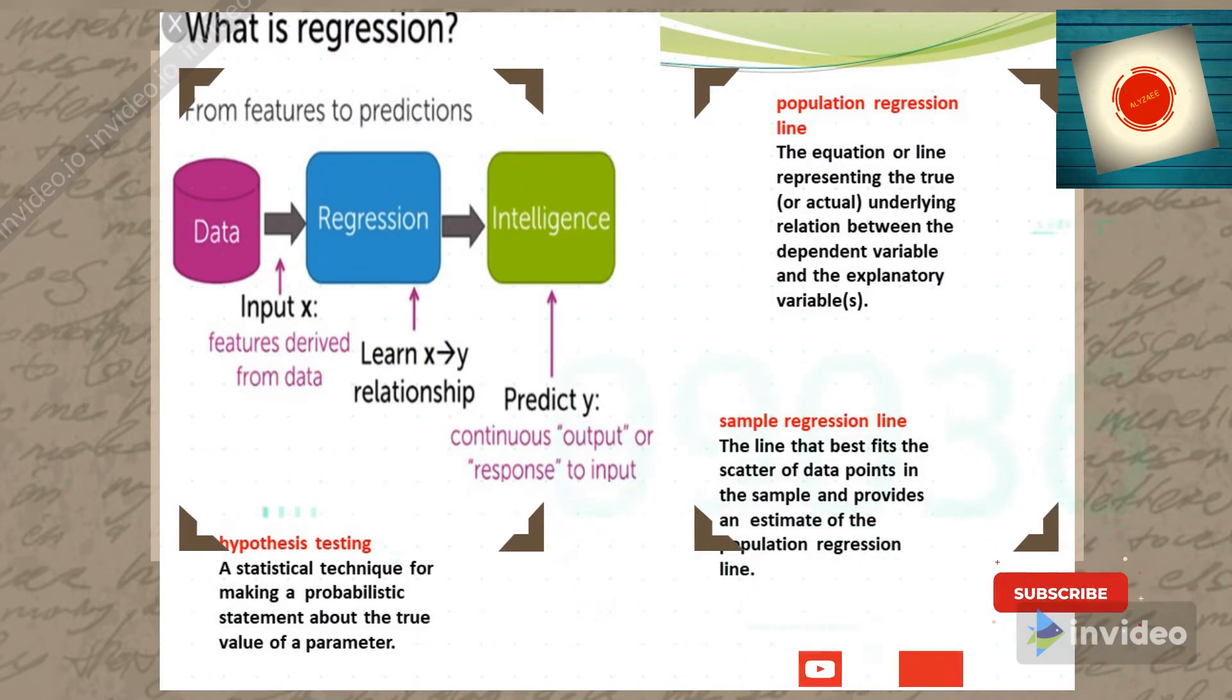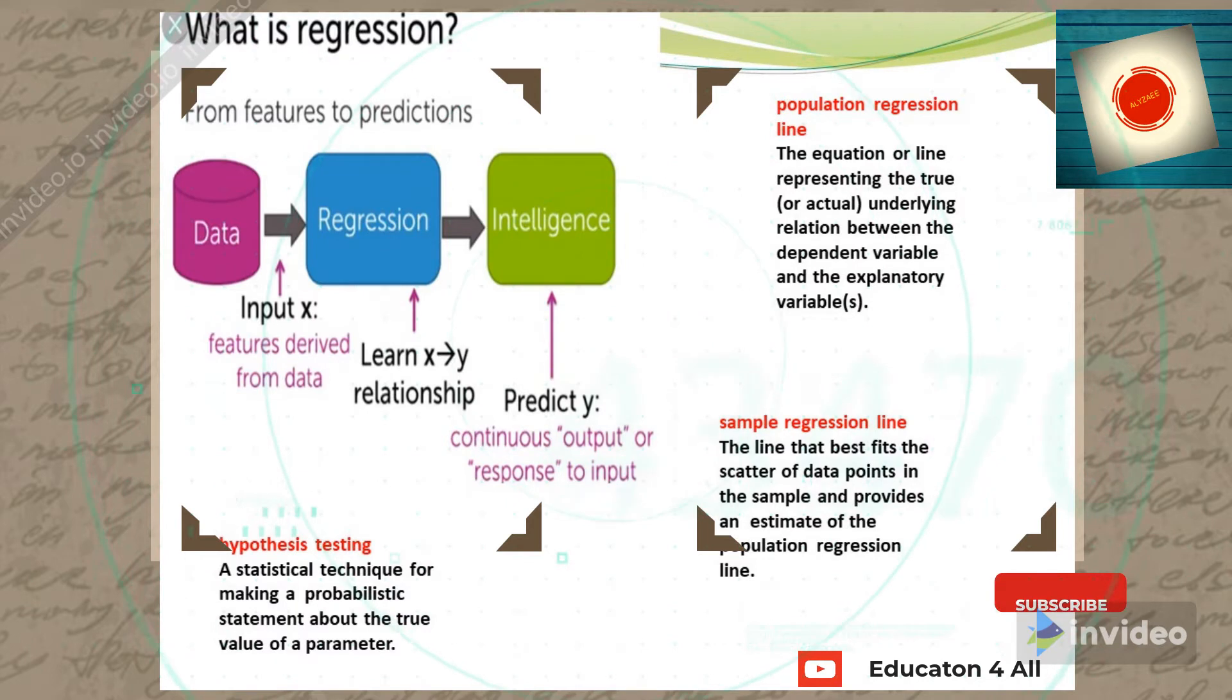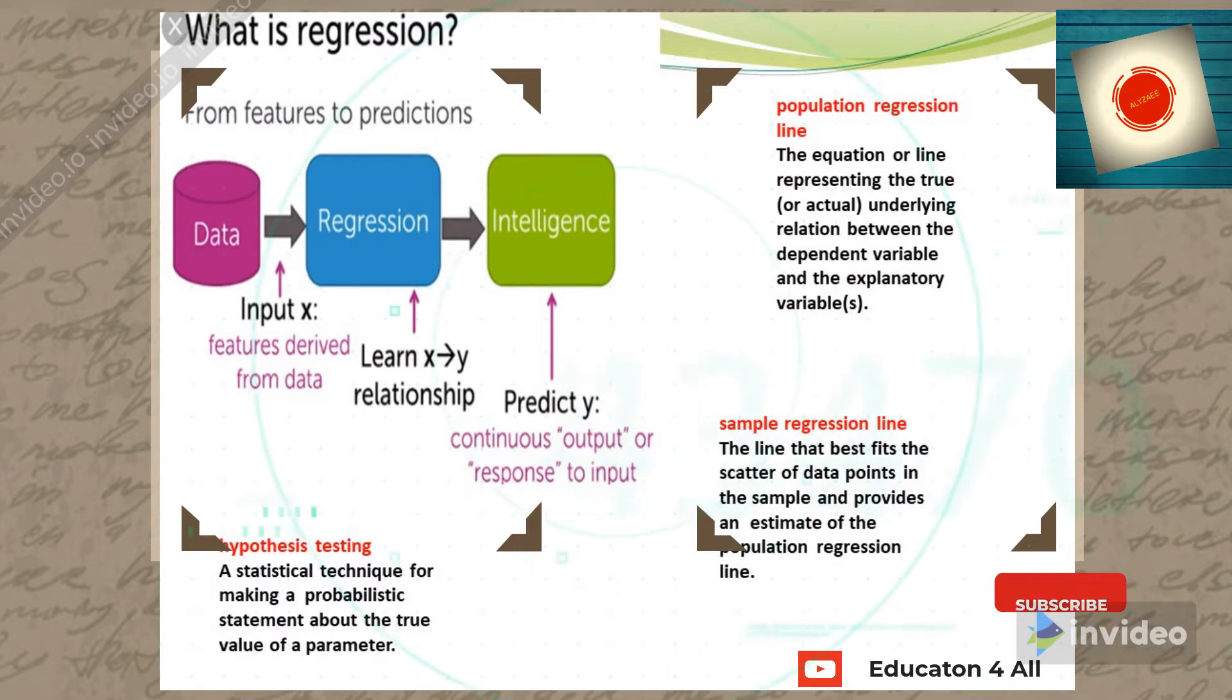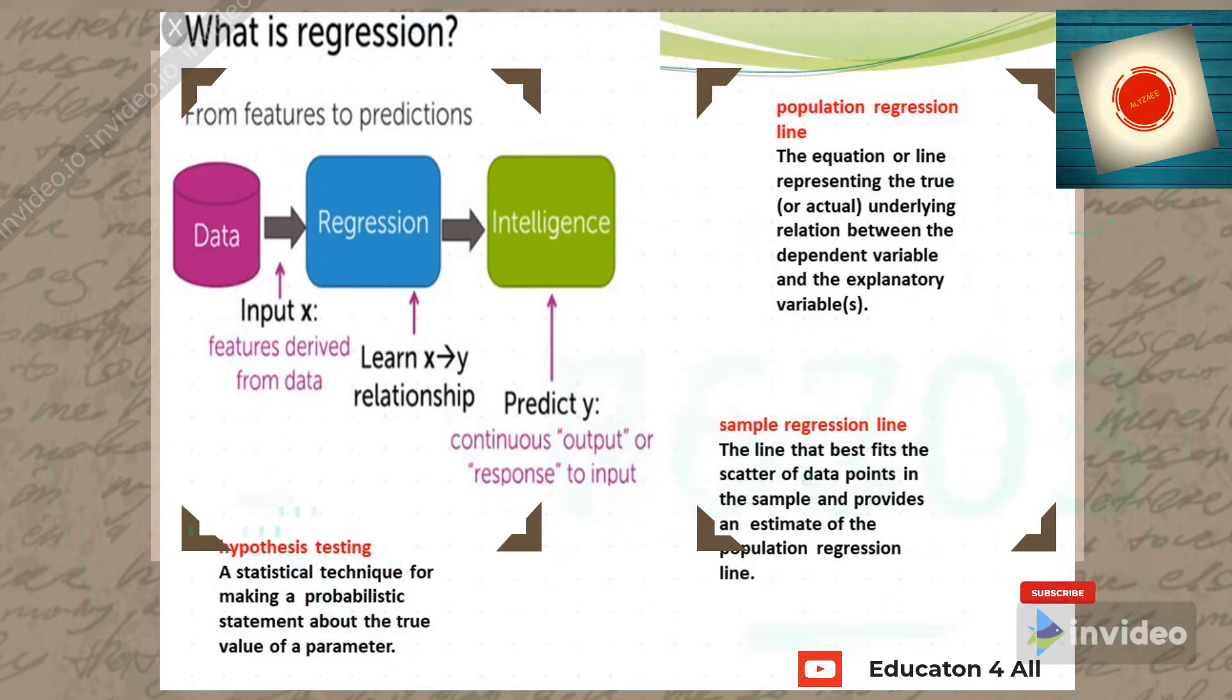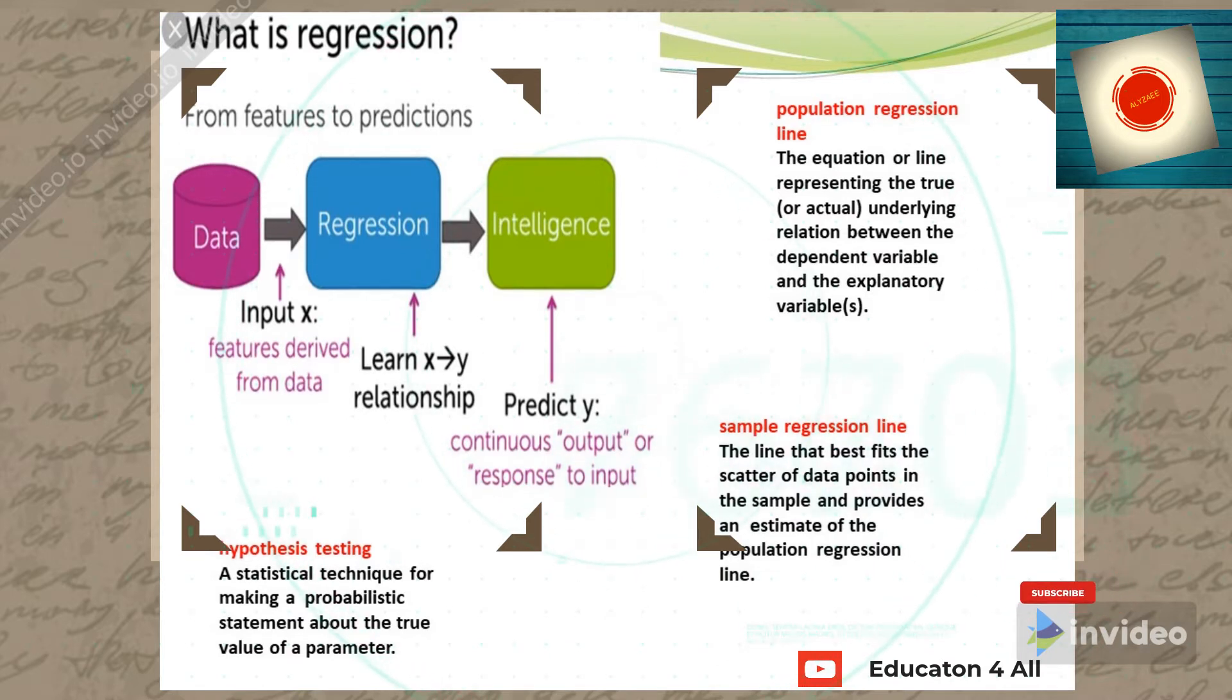From features to predictions: data leads to regression and then to intelligence. Input x consists of features derived from data, learning the relationship from x to y, with prediction y as continuous output or response to input.